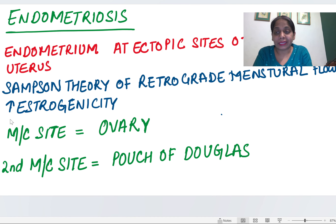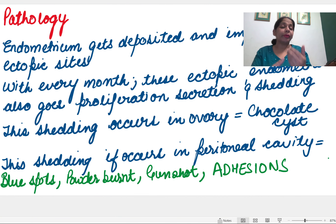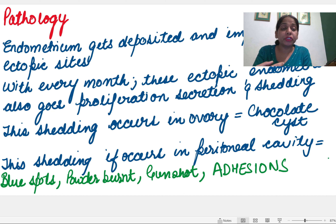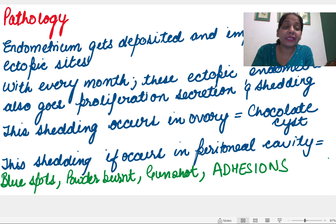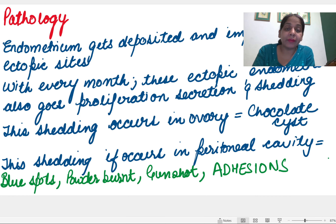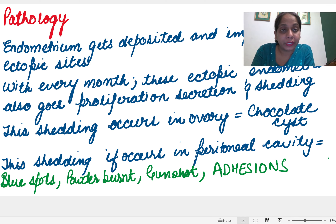What is the pathology? Just as normal endometrium undergoes changes every month under the hormones estrogen and progesterone — undergoing proliferation, secretion, and then shedding — this ectopic endometrium also undergoes the same changes. Normally the shedding comes out via the vagina, but here it cannot. When the ectopic site is the ovary, the endometrial sheddings form a chocolate cyst. When implanted in the peritoneal cavity such as the pouch of Douglas, the sheddings form blue-colored powder-burn spots and adhesions.